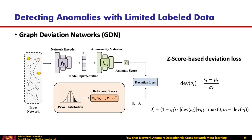A Graph Deviation Network is composed of three parts: a network encoder for learning node representations, an abnormality evaluator for estimating the anomaly score for each node, and a deviation loss for training the whole network. GDN first uses a GNN backbone anomaly score learner to assign each node with an anomaly score, and then defines the mean of the anomaly scores based on a prior probability to serve as a reference score for guiding the subsequent anomaly score learning. By leveraging a deviation loss, GDN is able to enforce statistically significant deviations between the anomaly scores of abnormal and normal nodes in the anomaly score space.